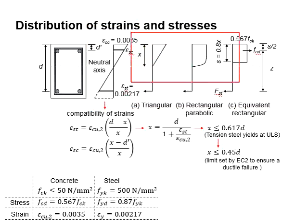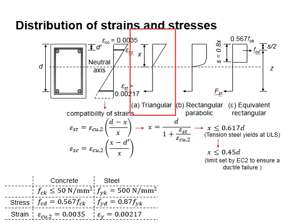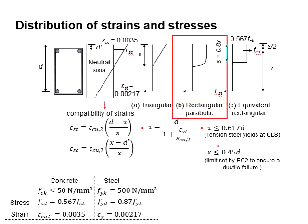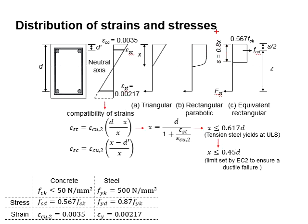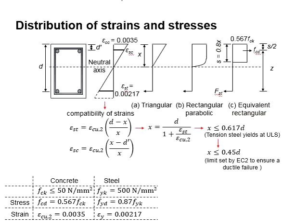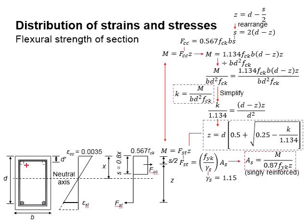Looking at the stress diagram: under the serviceability limit state, a triangular stress diagram is developed, while under the ultimate limit state, a rectangular parabolic shape is produced. This shape is rather complicated and calculations based on it are tedious. It can be represented by an equivalent rectangular stress block, and from here on we will focus our discussions on the equivalent rectangular stress block diagram.